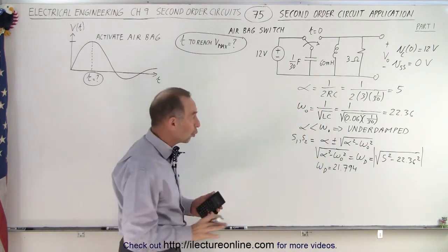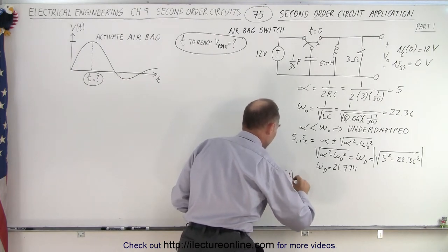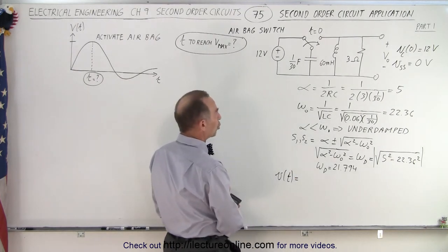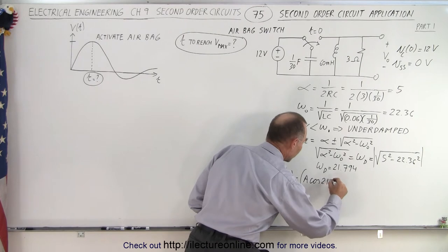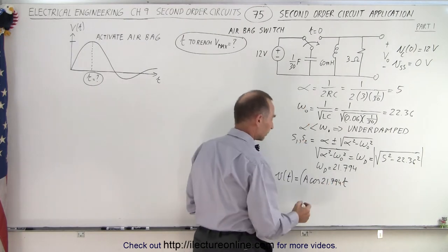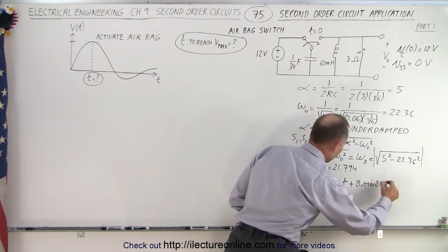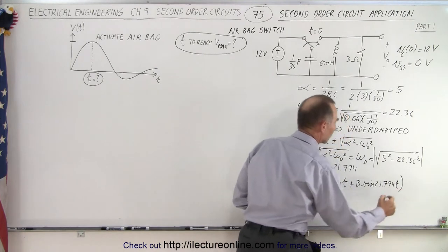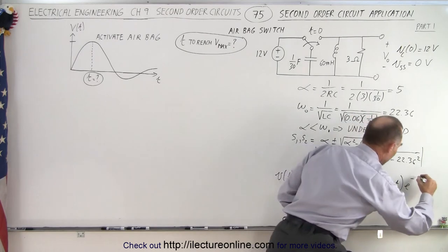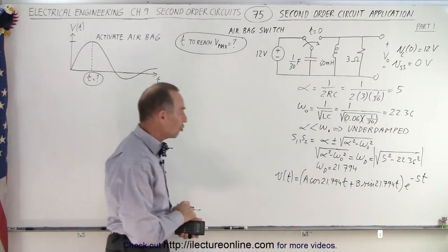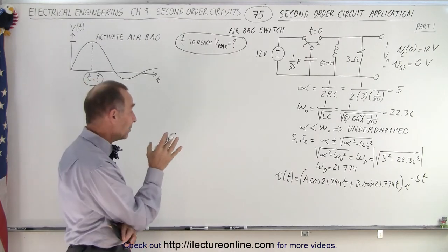Now we can write the general equation for the circuit. The voltage as a function of time is equal to the quantity A times the cosine of 21.794t plus B times the sine of 21.794t, the whole thing multiplied by e to the minus 5t. That is the general equation of the voltage across the resistor, which means we need to find A and B.